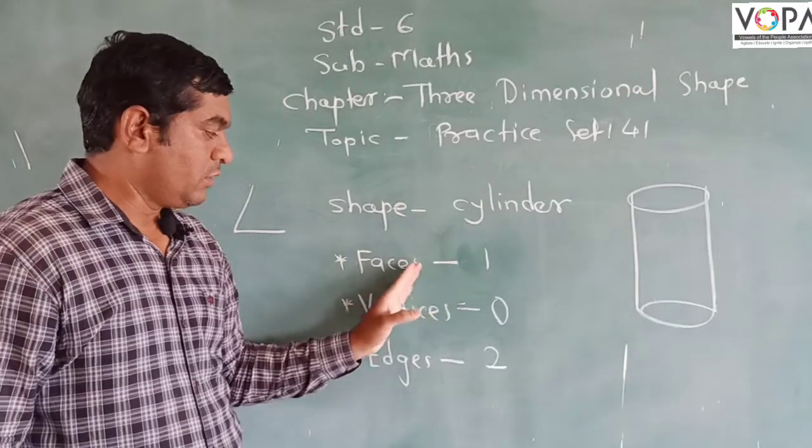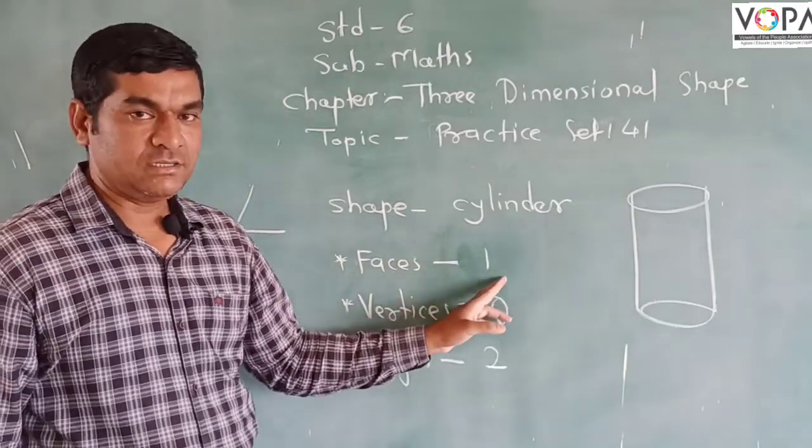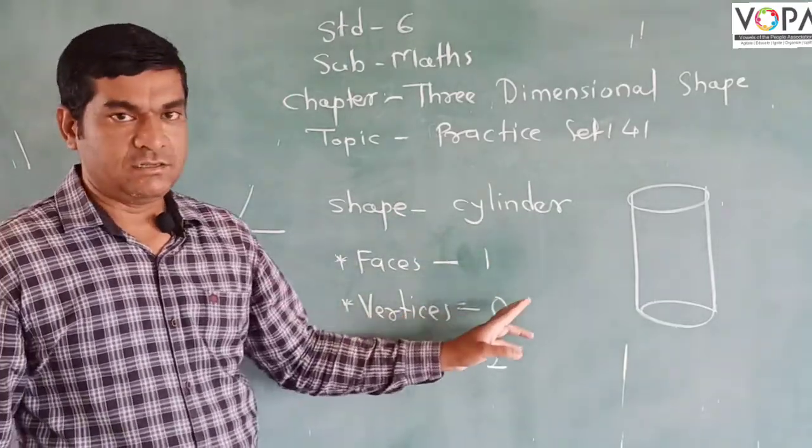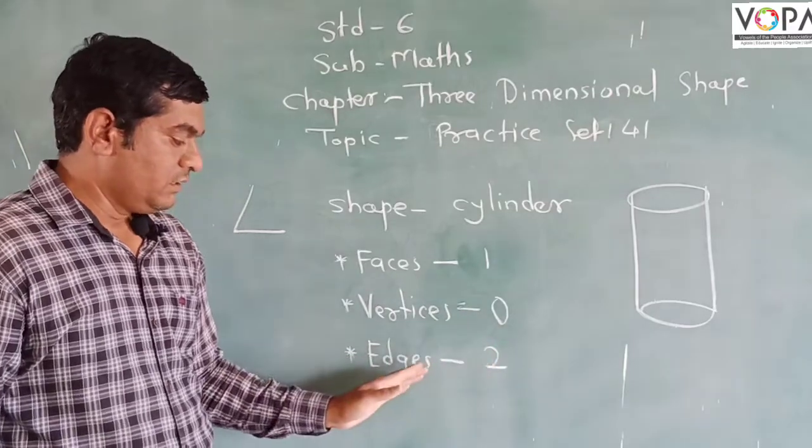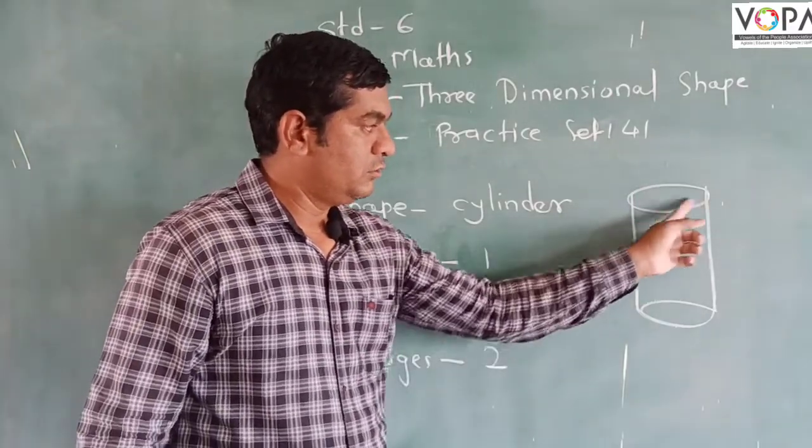So the number of faces in a cylinder is 1, vertices is 0, and the number of edges in a cylinder are 2.